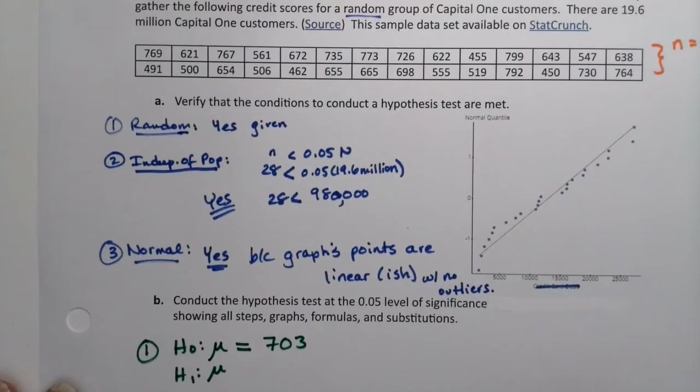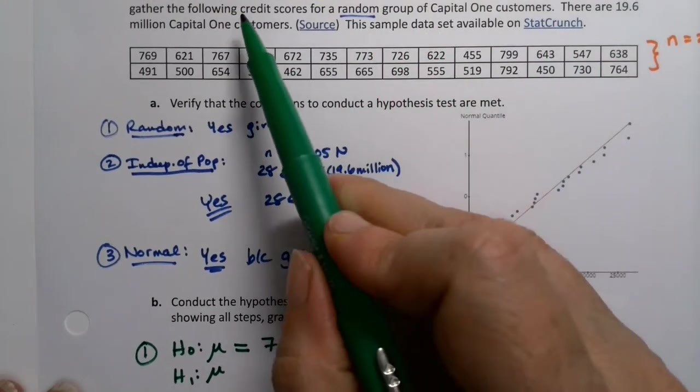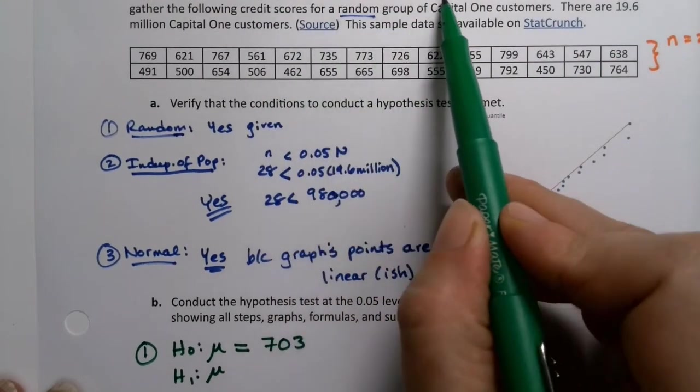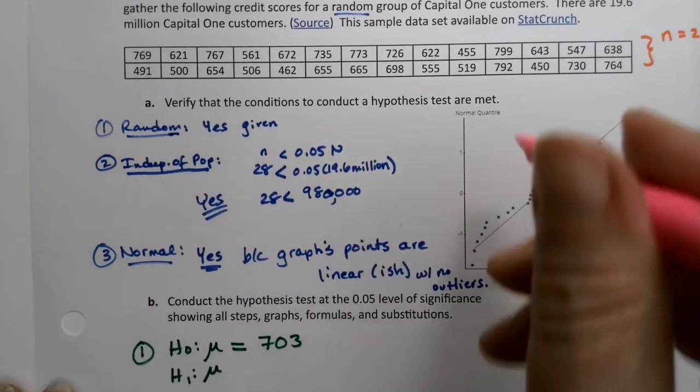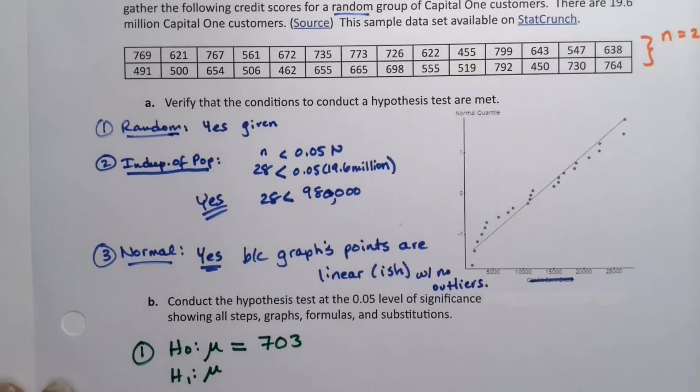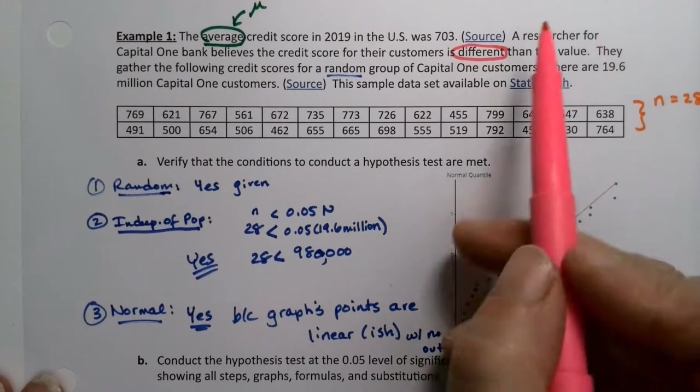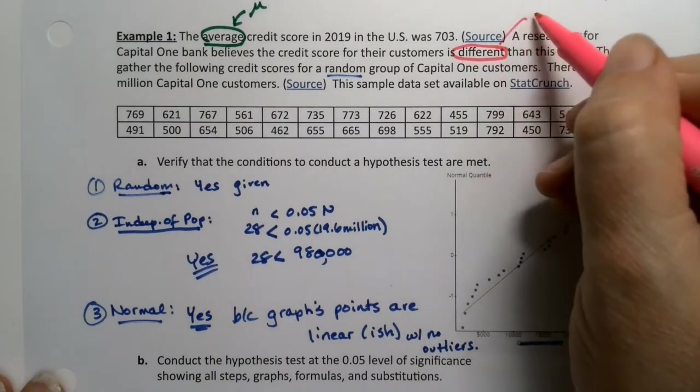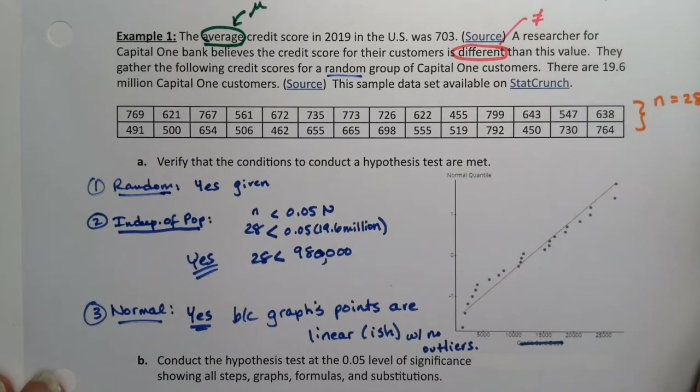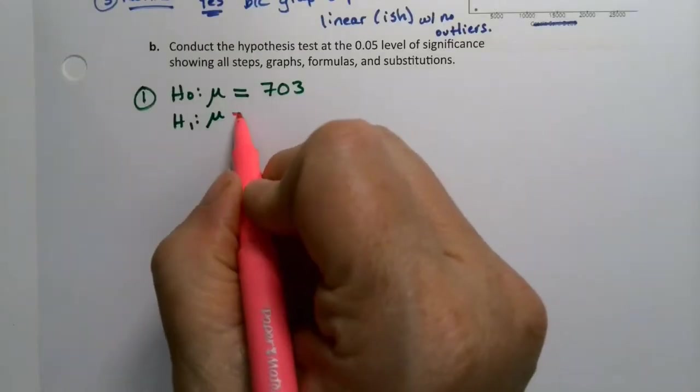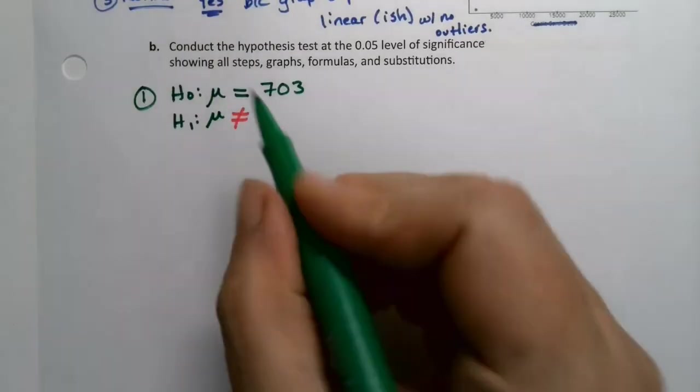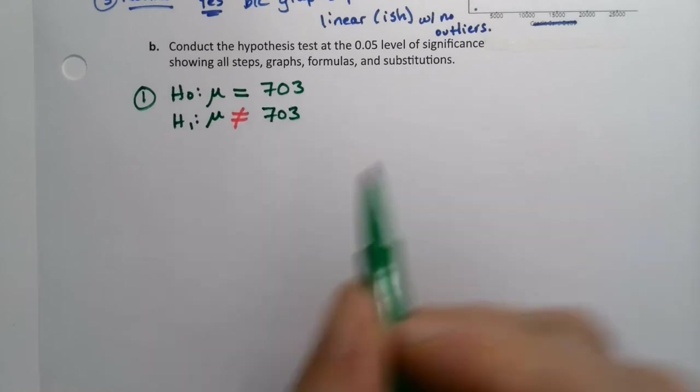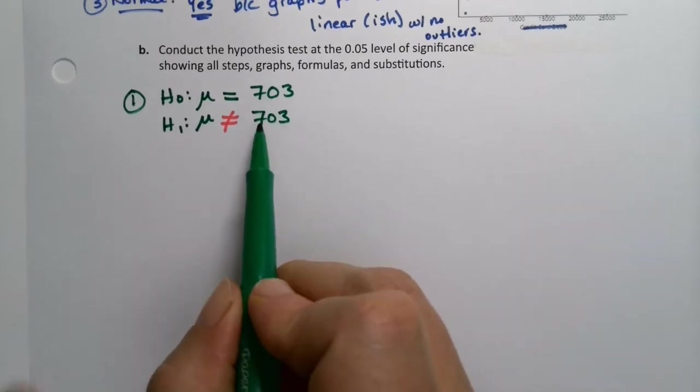And then, this particular person working for Capital One Bank believes the credit score for their customers is different than that value. Different than that value means not equal to. That's not giving you a particular direction. That's just not equal to. So down here, we can say not equal to. And then, remember, it's the same number for both. So whatever you assume to be true is still assumed.